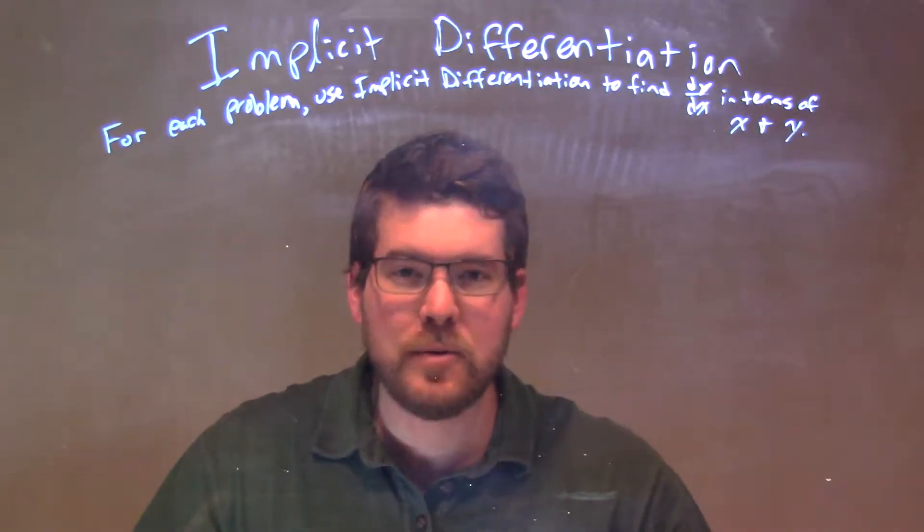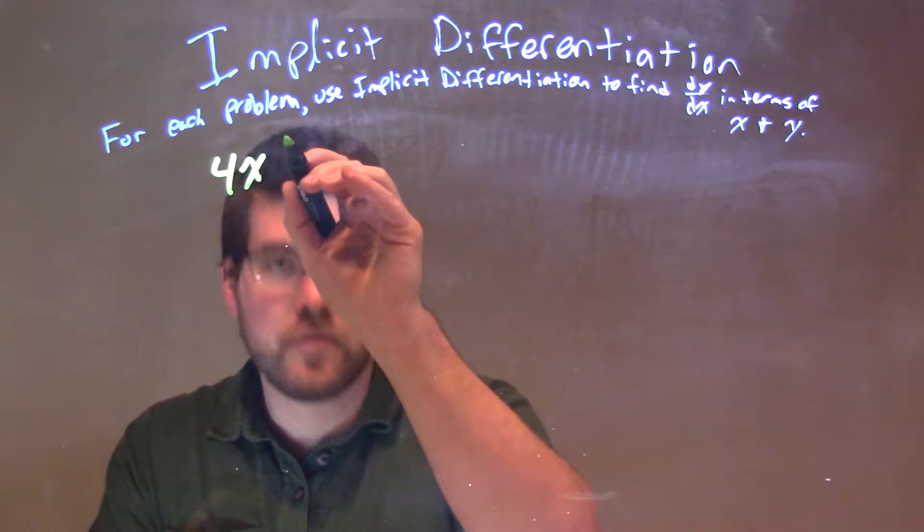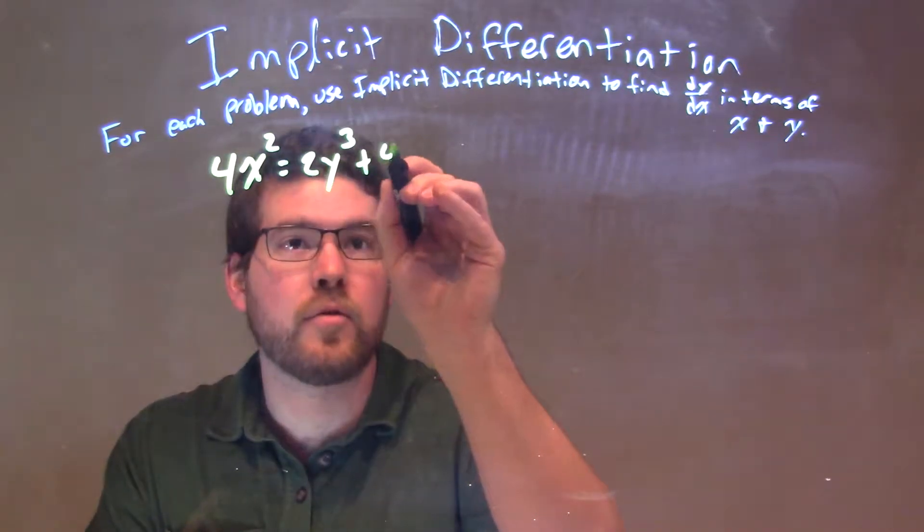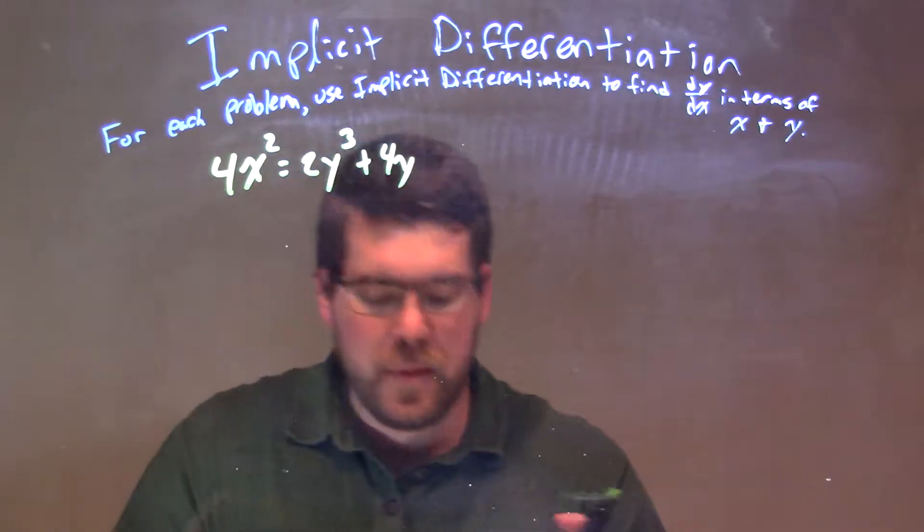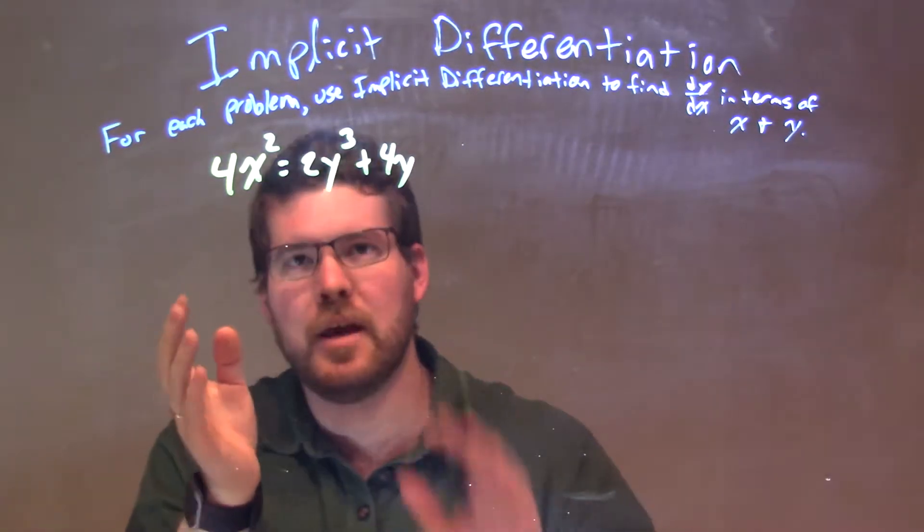So, if I was given this problem, 4x squared equals 2y to the third plus 4y. Well, what do I want to do? I'm going to use implicit differentiation, and I'm going to treat everything the same except for the y's.